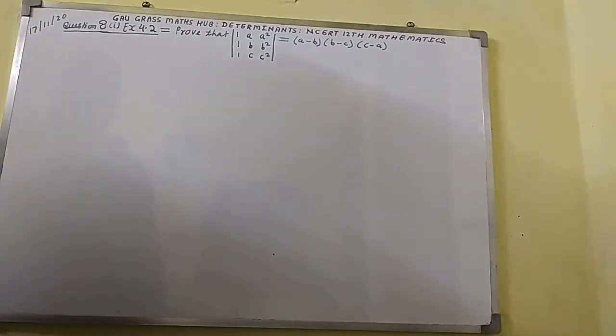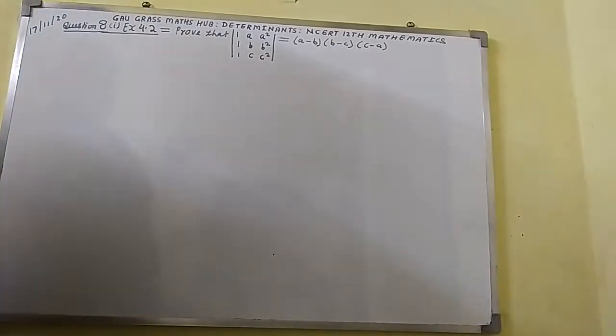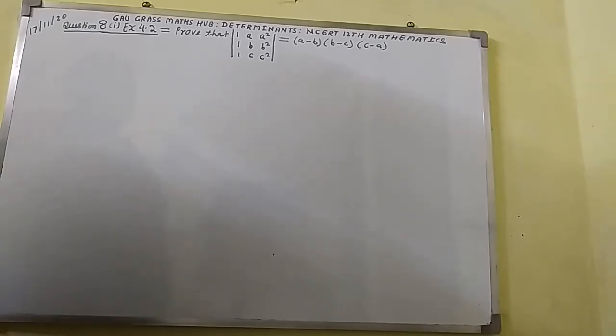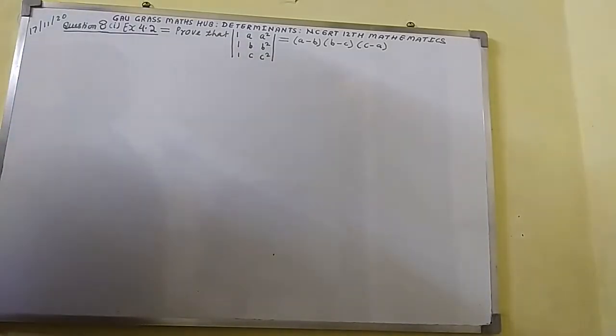I am from Gowgrass Maths Hub. I am going to discuss Question Number 8, Roman 1, Exercise 4.2, taken from Chapter 4, Determinants, in Class 12 Mathematics. Prove that the determinant with first row [1, A, A²], second row [1, B, B²], and third row [1, C, C²] equals (A-B)(B-C)(C-A).